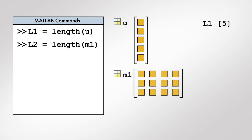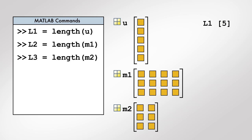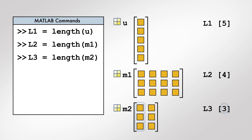If we pass a matrix as input to the length function, the output is a single number that is equal to the maximum of the number of rows of the matrix or the number of columns.